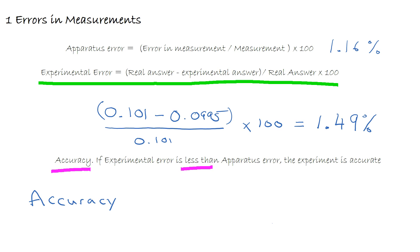This is important because if we look at the accuracy from our experiment, our experimental error is 1.49%, which is greater than our apparatus error of 1.16%. Therefore, our experiment is not very accurate and we need to improve our experiment somehow.